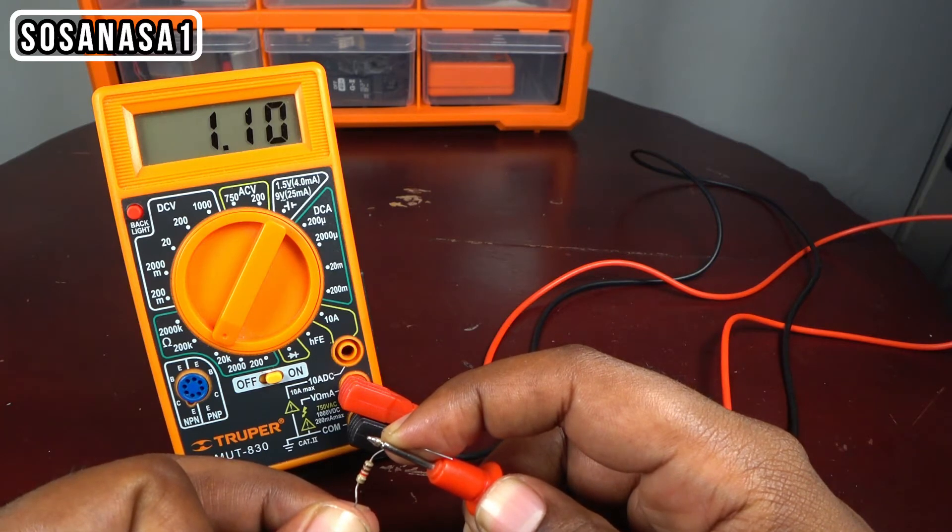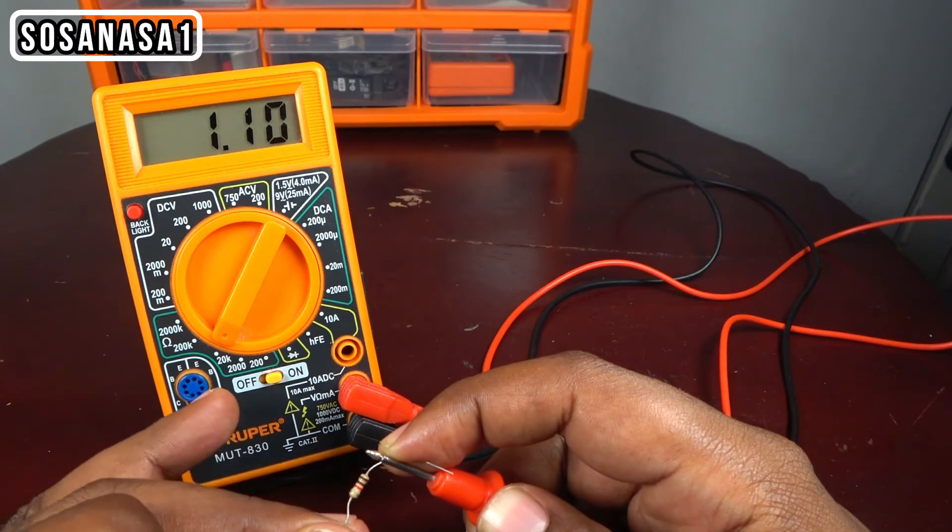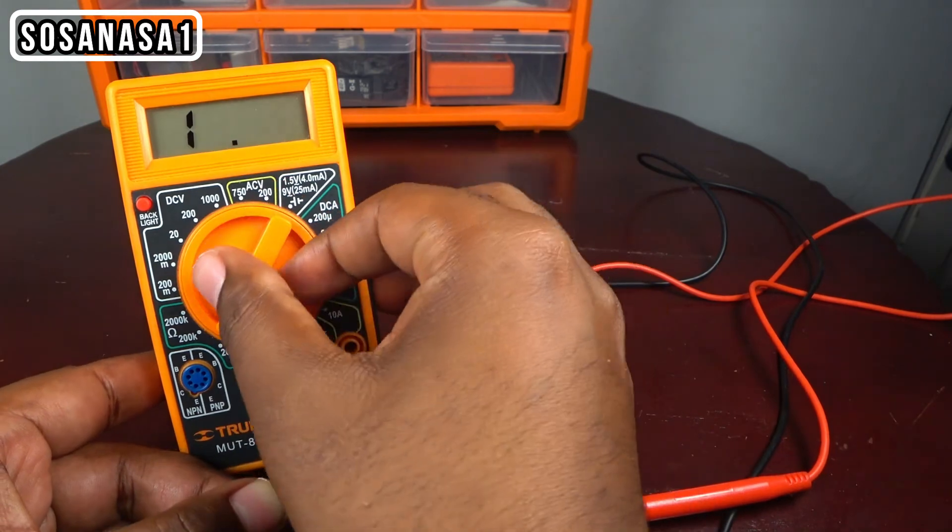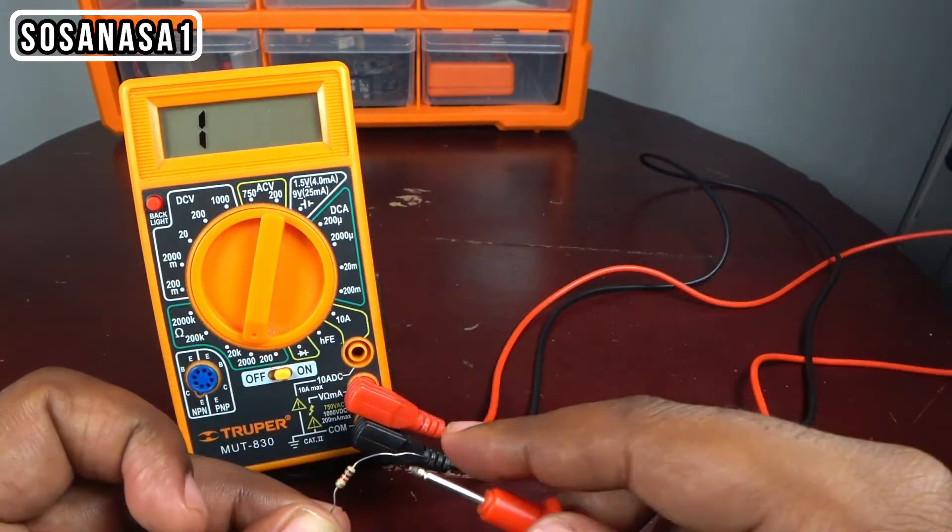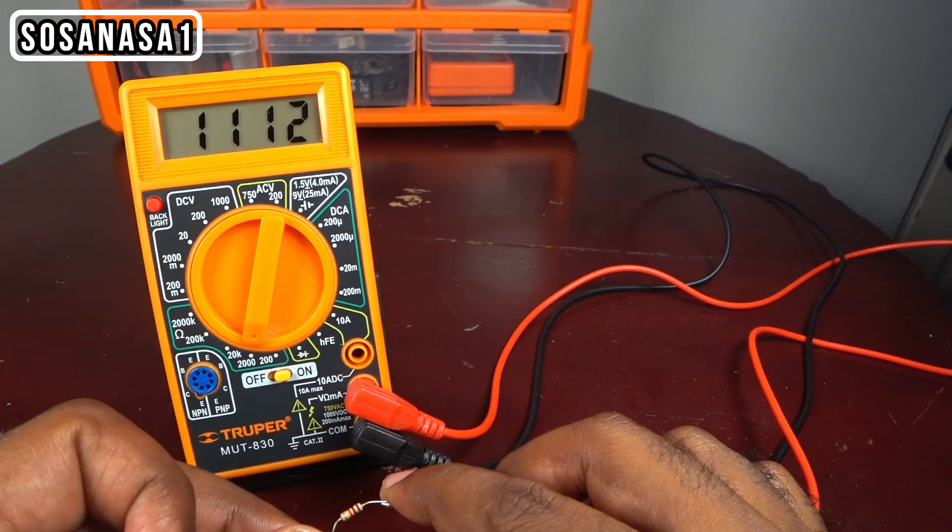If you see 1.10, it means 1.10 kilo ohms. You can move this and measure again. Now you can watch the complete number.